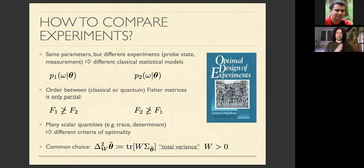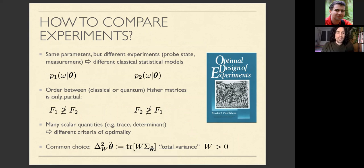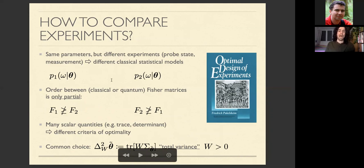Let me go back to the issue of optimality. This is not necessarily a quantum problem: even classically, if I want to estimate the same parameters but have different experiments — in the quantum setting, choosing a different probe state or a different measurement — I end up with different statistical models. In general I cannot always compare the Fisher matrices of different models, so I need to choose some criterion for optimality.